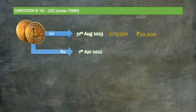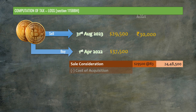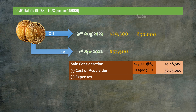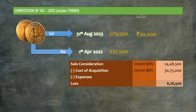Let's now see how loss is computed. Consider the same example but with the date of purchase changed to 1st April 2022 and the purchase value at $37,500. The sale consideration remains the same. The cost of acquisition here is $37,500 multiplied by exchange rate of 82, which equals Rs. 30,75,000. Since expenses related to sale cannot be claimed as a deduction, the difference between sale consideration and cost of acquisition — Rs. 6,26,500 — is the loss here.